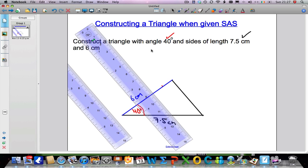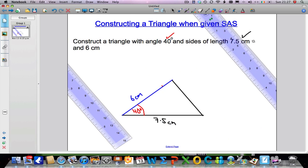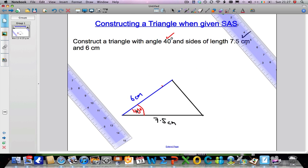We've constructed a triangle that has a 40 degree angle, has a side that's 7.5 cm in length, and a side that's 6 cm in length. And that is how you construct a triangle when given SAS.